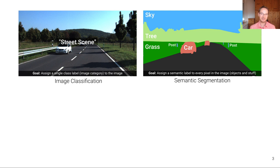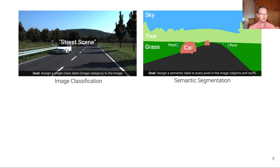In semantic segmentation, the goal is different. Given the same image as input, the goal is to classify each individual pixel with respect to its semantic category. We want to assign a semantic label to every pixel in the image. These regions include object categories such as cars, but we don't distinguish individual instances — we just assign the label 'car' — as well as stuff labels like sky, trees, or grass.